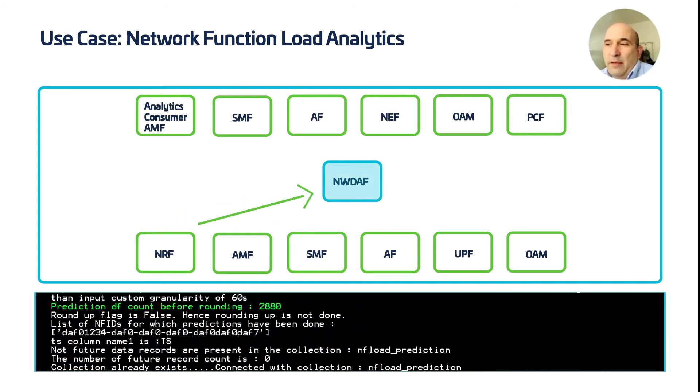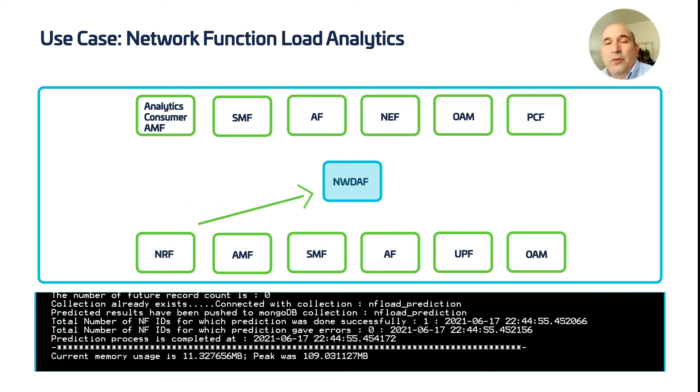This model predicts the SMF load every minute for the next two days, which is 2,880 predictions. These predictions are stored for quick access upon request. As the NWDAF continues to receive load data for this SMF, the 5G IQ NWDAF can compare the actual values to the predictions to identify when model retraining is needed. The prediction logic can continue to be executed as this new data arrives in order to predict out further in time.